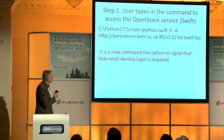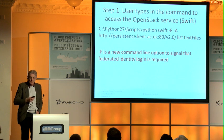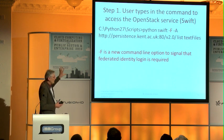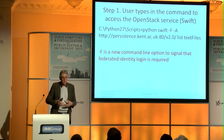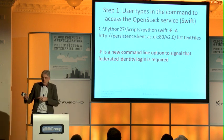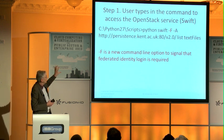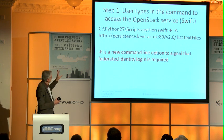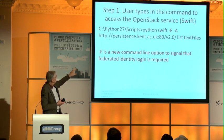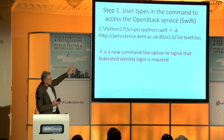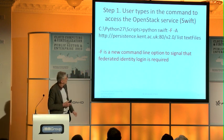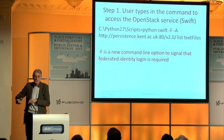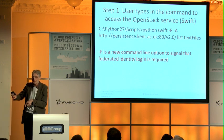This is a demonstration — a screen capture, not a live demo — of how it works today, using standard software downloaded from OpenStack. They currently provide command-line clients and we're also working on web-based clients as part of student projects. This is a command-line client for accessing the service called Swift, which is the cloud file storage service. The user logs in saying they want to go to Swift. The persistence account is the name of the federation Keystone service, and the command is to list the text files. We've added a new minus-F option: instead of putting your username and password in the command, you say minus-F — I want to do federated login, not send a username and password.